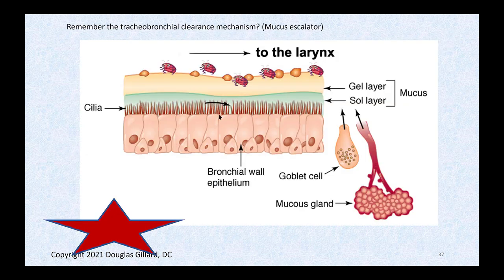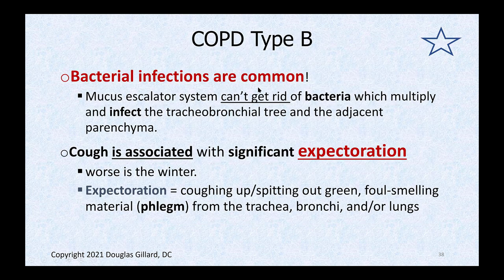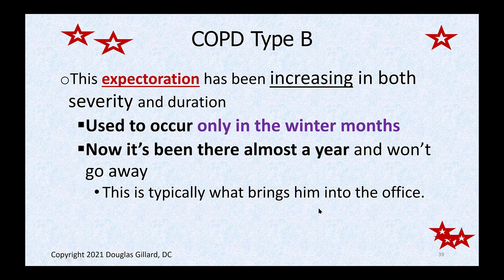Infections are very common — bronchitis and even pneumonia — because you can't get the bugs out. The cough is associated with significant expectoration of foul-smelling phlegm from the trachea and bronchi. This expectoration has been getting worse in severity and duration, used to last only in winters and now goes into the summers. Classic chronic bronchitis.